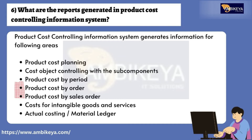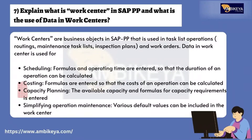The product cost controlling information system generates information for the following areas: product cost planning, cost object controlling with the subcomponents product cost by period, product cost by order, product cost by sales order, costs for intangible goods and services, and actual costing / material ledger.